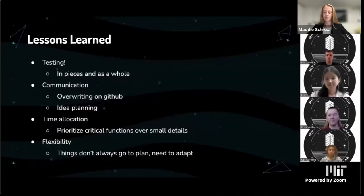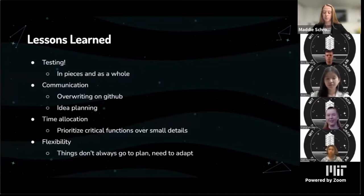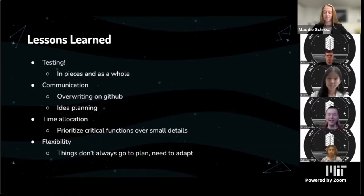The overall lessons we learned throughout this project: Number one was to test all the time, both in pieces and as a whole — we were able to pinpoint errors really quickly this way. The second lesson was to communicate; without communication, we would end up overriding each other on GitHub. Third was time allocation — we learned to prioritize critical functions over small details. And the last was flexibility: things don't always go to plan, and we need to adapt, just like we would need to in space.